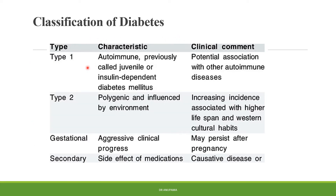The classification of diabetes includes type 1, type 2, gestational, and secondary. Type 1 can be autoimmune, previously called juvenile or insulin-dependent diabetes mellitus. Type 2 is polygenic and influenced by environment, with increasing instances associated with higher life span and western cultural habits. Gestational diabetes is aggressive in clinical progress and may persist even after pregnancy. Secondary diabetes is a side effect of medications or some causative agents. Type 1 also has a potential association with other autoimmune diseases.